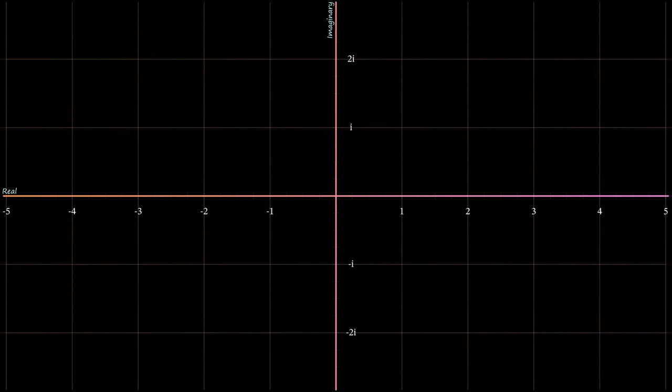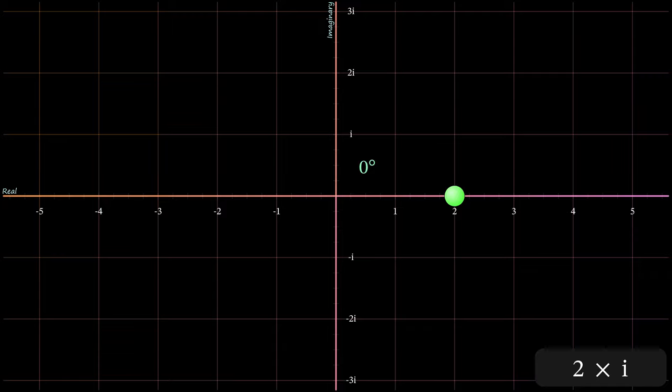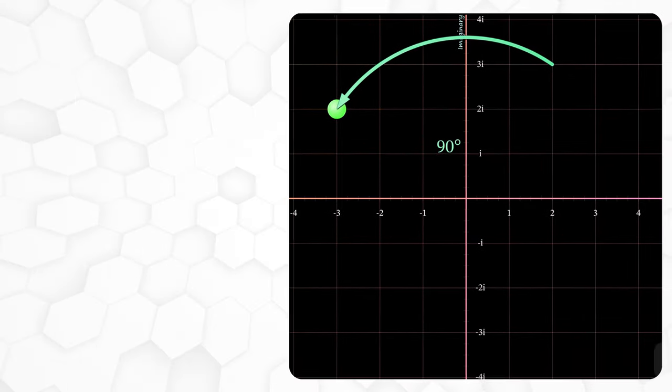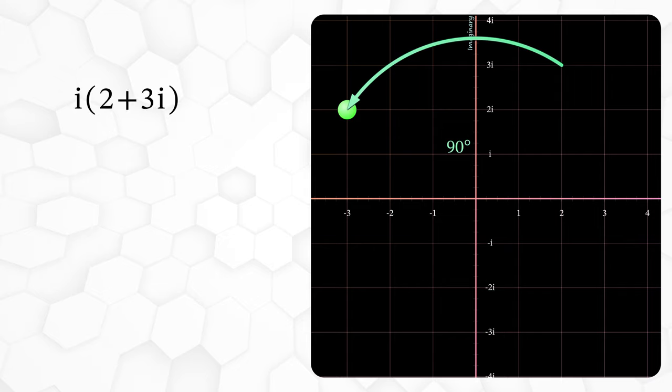It's very useful to think of i as a 90 degree rotation around the origin. We always measure angles anti-clockwise starting from the positive real axis. In fact any number multiplied by i is a 90 degree rotation. For example, 2 becomes 2i. 2 plus 3i becomes minus 3 plus 2i.